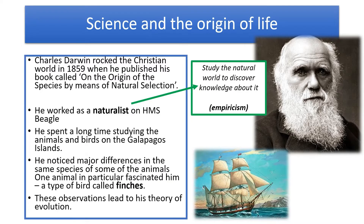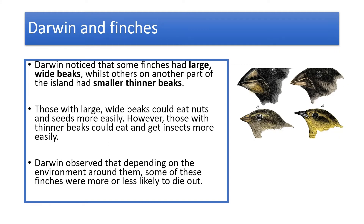In particular, there was one type of animal Darwin was interested in: little birds called finches. Darwin noticed that some of the finches had large, wide beaks, whereas other finches had smaller, thinner beaks. He questioned why this would be on the same island. He noticed that those with the large, wide beaks could eat seeds and nuts more easily, while those with the little thin beaks were specialists at eating insects in trees and pieces of bark. He found that animals with the large, wide beaks wouldn't be found alongside many with thin beaks, and vice versa — and so he started to reach some conclusions.